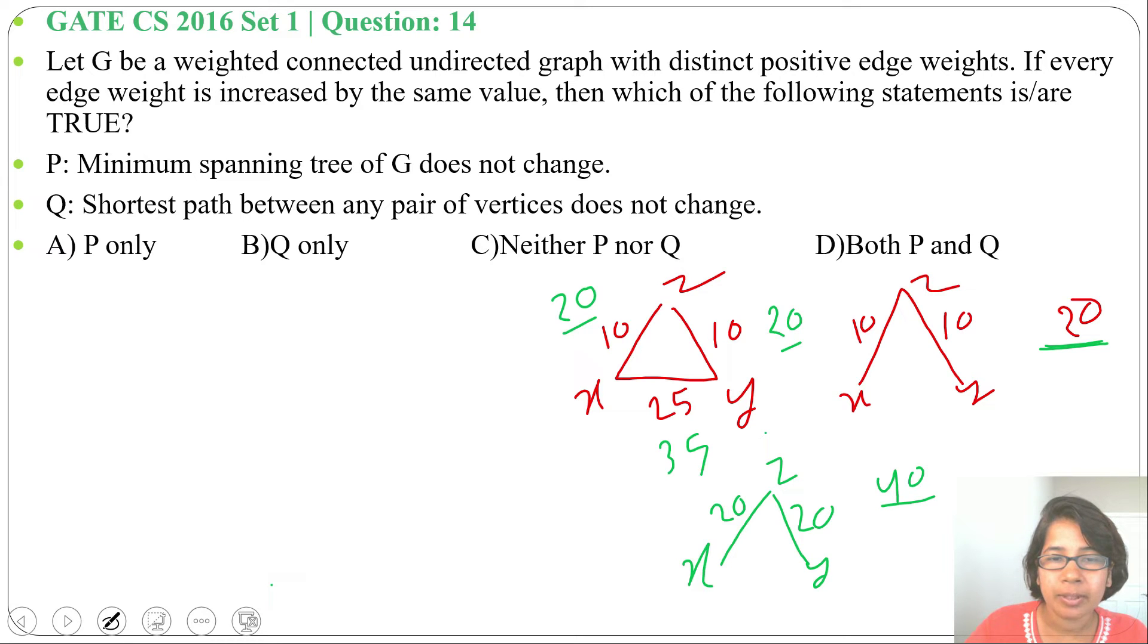So here, the shortest path from X to Y is 10 plus 10 equals 20. So this is the shortest path: X to Z, then Z to Y. Here, 10, 10, 10, 10 plus 10 is 20. After increasing weight, this path cost will be 20, 20, so 20 plus 20 will be 40.